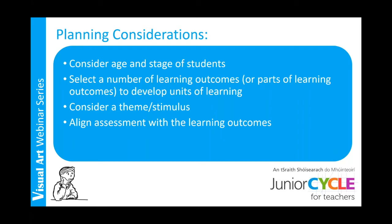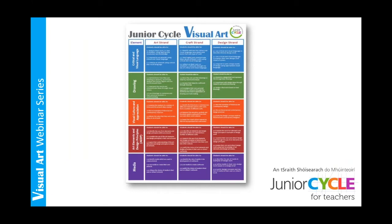It is crucial that the assessment is directly aligned to the learning outcomes selected. The assessment should capture the learning that has taken place. If the students are able to achieve the assessment, we know they have achieved the learning. And finally, reflection — reflecting on what worked well during the unit, and also reflecting on how learning outcomes were selected and developed to ensure that some learning outcomes were not overlooked. There is sometimes a temptation to select learning outcomes we are becoming familiar with, but all 45 learning outcomes must be developed over the three years. There is a section for reflection in our sample planning template online.